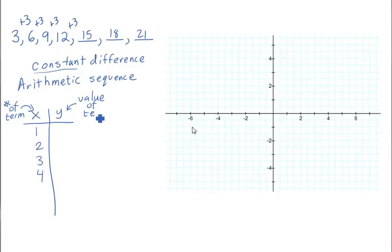So if I have x1, so the first term, the value is three, the second term, the value is six, the third term, nine, the fourth term, twelve. So with that, I'm now going to plot that on my graph.